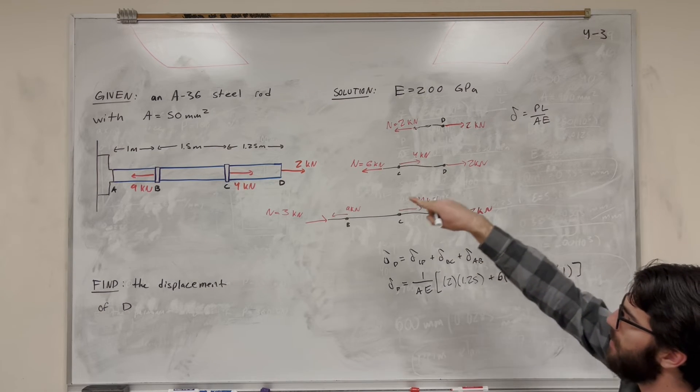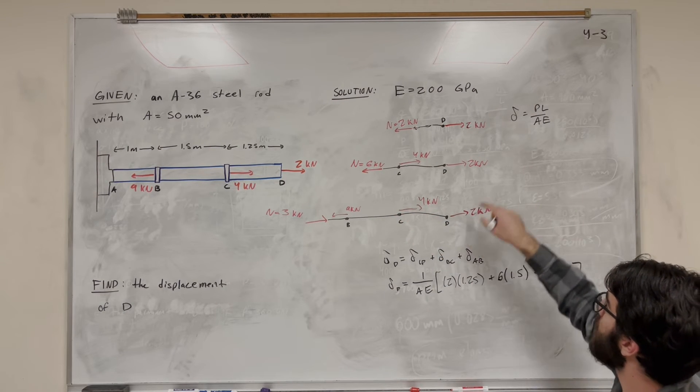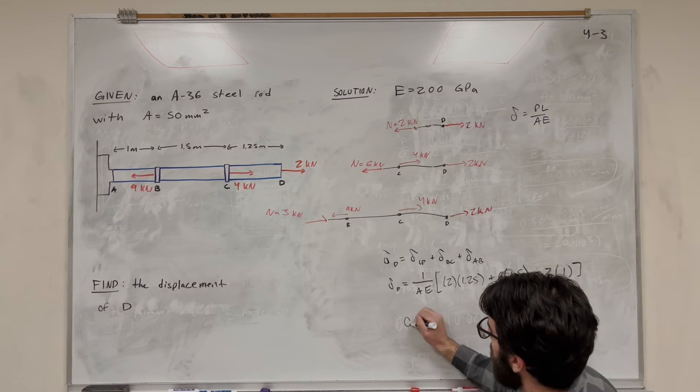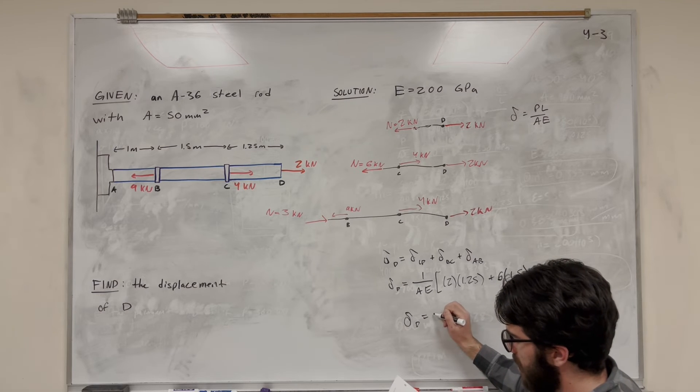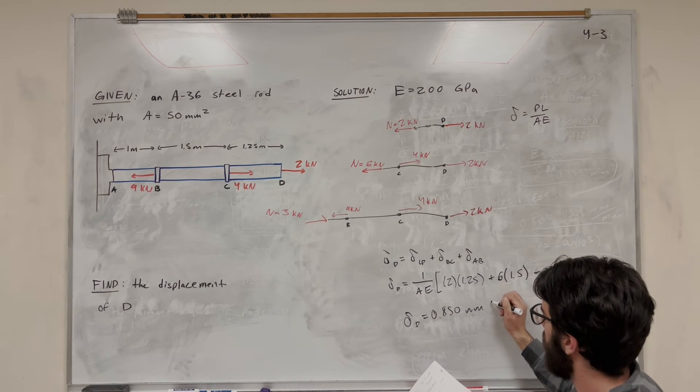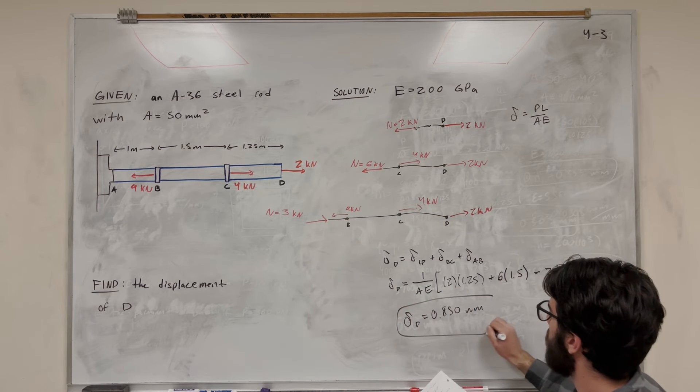Okay, so if you plug in our area, 50 millimeters squared, and our modulus of elasticity, 200 GPa, you don't have to change the units because we kept it in kilonewtons. You're going to find that the displacement of D is equal to 0.850 millimeters.